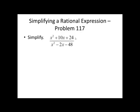Both of these are trinomials. The numerator factors to be x plus 4 times x plus 6. The denominator, x plus 6 times x minus 8. We have a common factor of x plus 6 in the numerator and denominator, leaving us with x plus 4 over x minus 8.